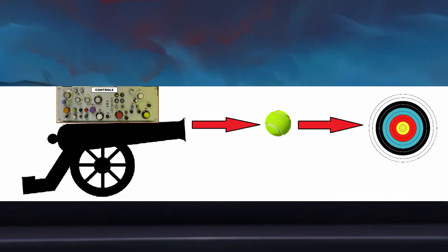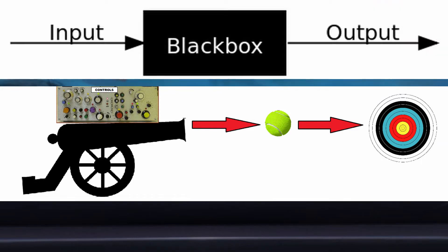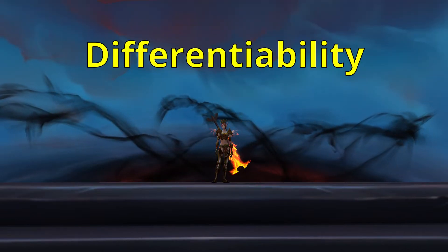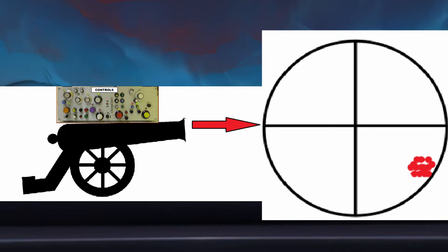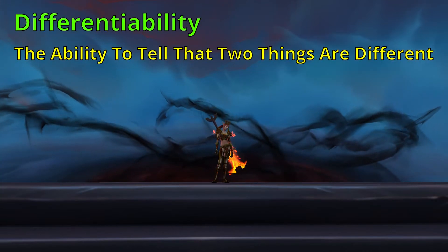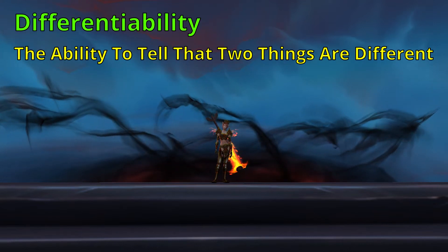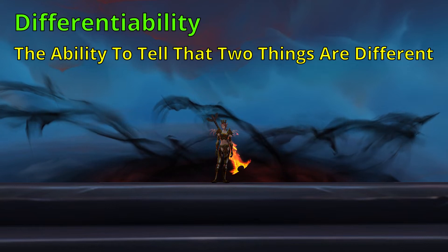Let's pretend that we had a device that we give a ball and it shoots that ball at a target. And let's also pretend that this device had 50 settings that we could adjust — some of them influence where the ball would hit the target and some don't — and we have no idea what each setting does. Academically, this is what we would call a black box system. Our goal is to figure out how to consistently hit the center of the target. When you shoot balls at the target with the same settings, if the device is precise, then you will consistently hit the target in a tight grouping. If you adjust the settings and shoot another set of balls, it will create a second distinct grouping if the settings you changed had an impact on where the ball would hit. Differentiability is your ability to tell that two things are different. So as you increase precision, your ability to see the difference made by minute changes increases as well.